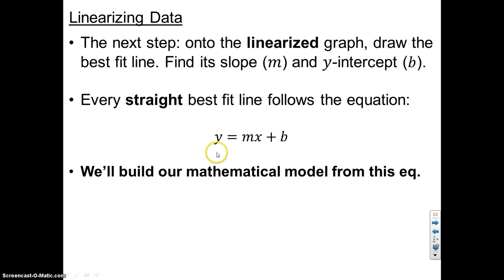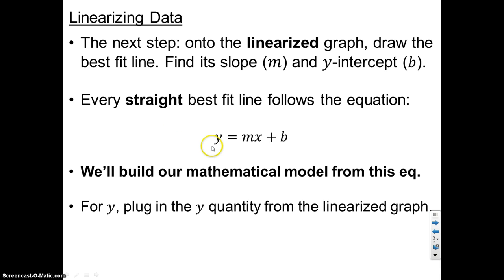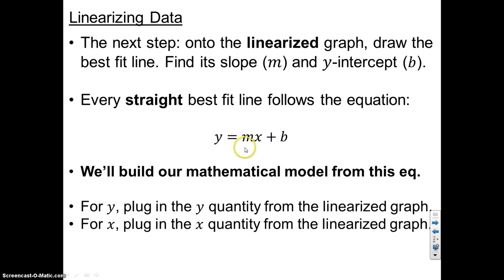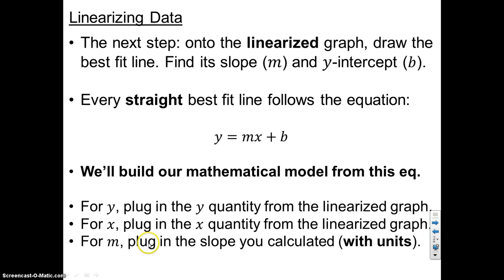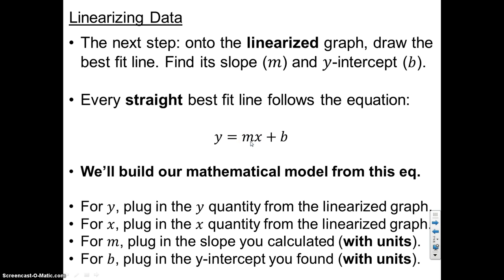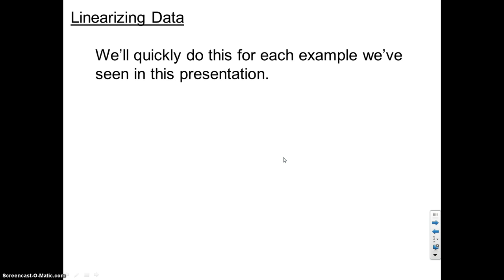For y, you plug in the y quantity — maybe kinetic energy or current. For x, you plug in the x quantity from the linearized graph — that might be acceleration, V squared, or 1/R. For m, you plug in the slope value you calculate, including its units. For b, you plug in the y-intercept. We're going to do this quickly for the examples we've looked at already.